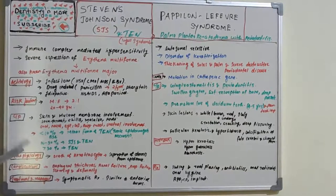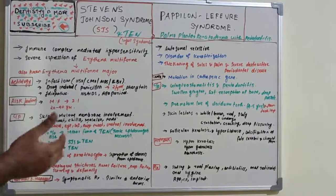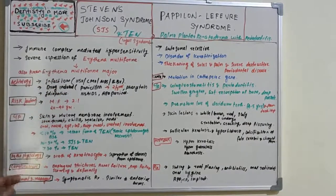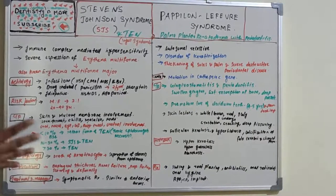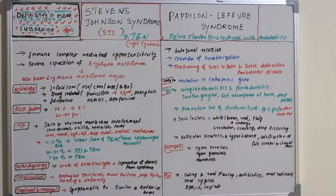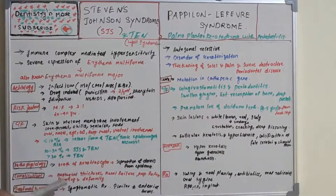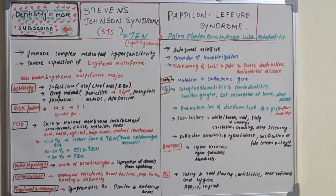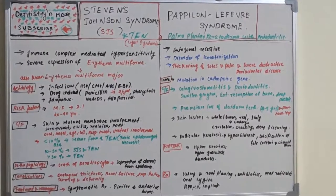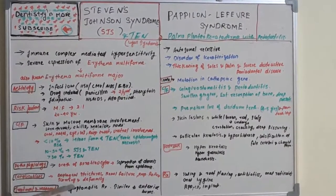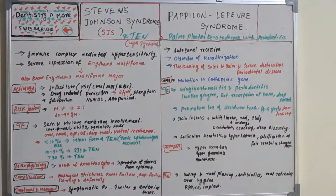Pathophysiology involves death of keratinocytes, which causes separation of the dermis from the epidermis — that is why the skin changes are visible. Complications include esophageal strictures, renal failure, respiratory failure, and scarring and deformity of the face. Extensive cases can result in multi-organ complications similar to severe burns.